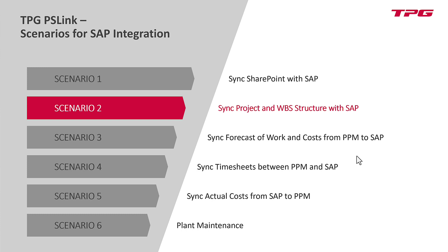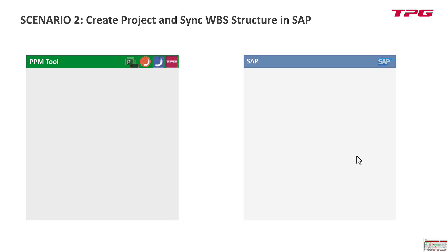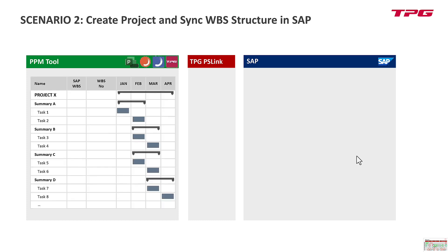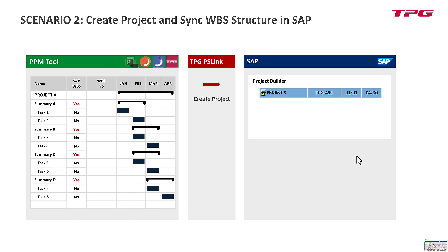Use case: we synchronize project and WBS structure with SAP. We start in the PPM tool with SAP and TPG PS Link in the middle. Starting with the project in Planisware Enterprise — one example, it could also go the other way. We create a new project, using user attributes to define which parts of the schedule should be transferred to SAP. We press a button, PS Link creates the project on the SAP side, and we get a new project definition — for example, TPG 499.